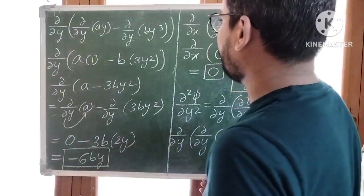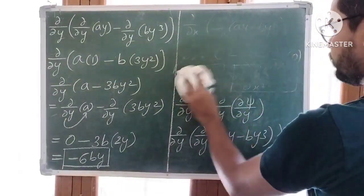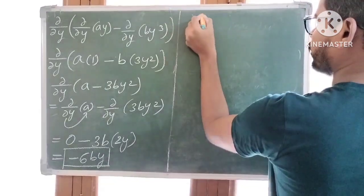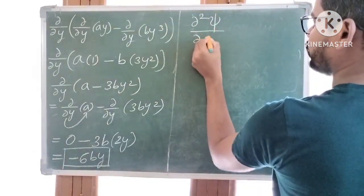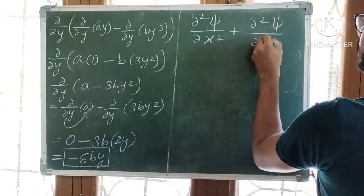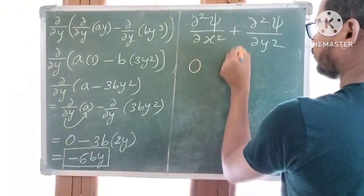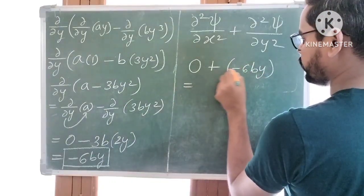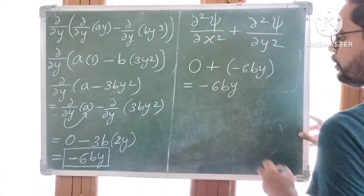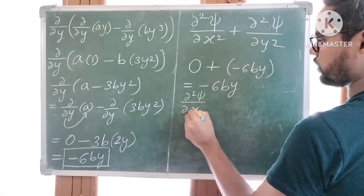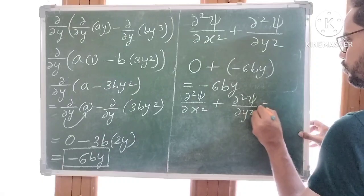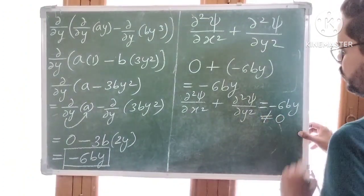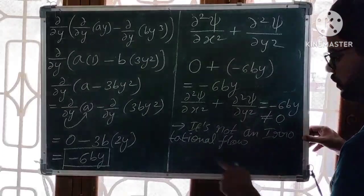Now we need to verify the Laplace equation: ∂²Ψ/∂x² plus ∂²Ψ/∂y² must equal 0. We found ∂²Ψ/∂x² equals 0, and ∂²Ψ/∂y² equals minus 6By. So the sum is 0 plus (minus 6By) equals minus 6By. Therefore, ∂²Ψ/∂x² plus ∂²Ψ/∂y² equals minus 6By, which is not equal to 0. It does not satisfy the Laplace equation, so it is not an irrotational flow — it is a rotational flow.